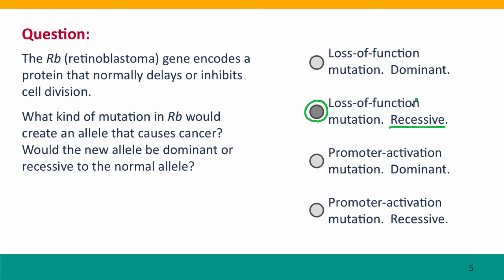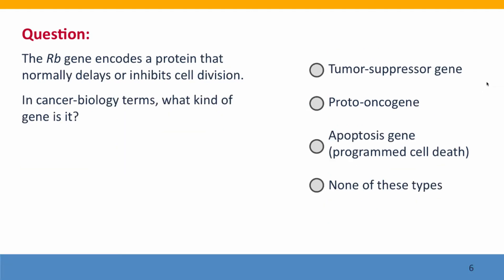Normally, although one copy has lost its function, the other allele, the other copy, is able to do its job, and so the phenotype is still normal. The retinoblastoma gene codes a protein that delays or inhibits cell division. What kind of a gene is it in the terminology used by cancer biologists? Retinoblastoma is what's called a tumor suppressor gene. That's because when a normal copy is present, the ability to form tumors is suppressed — a cell's division is suppressed. But when the gene is missing, then a tumor can form.